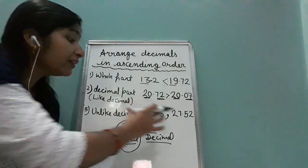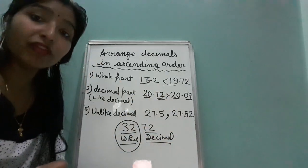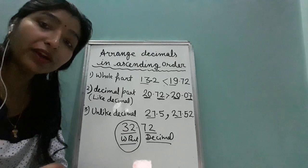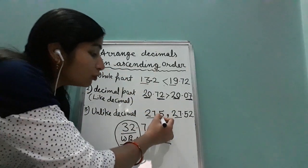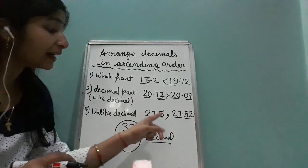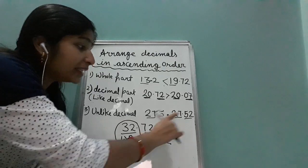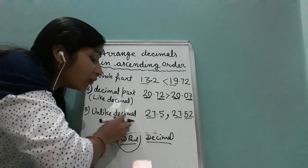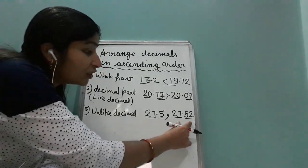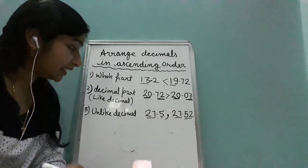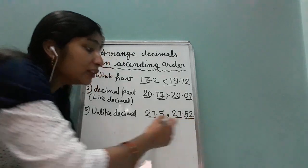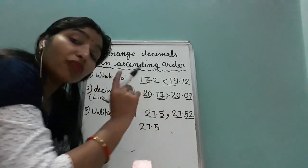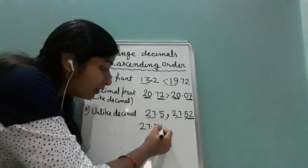Now what happens when the numbers are unlike decimals? First you see the whole part — it is the same. Then you move to the decimal part, but they are not like decimals. Here we have one decimal place but in this we have two decimal places. So first we have to convert them into like decimals by putting a zero at the end to make it two decimal places.